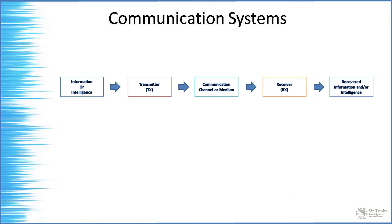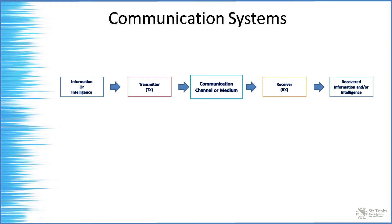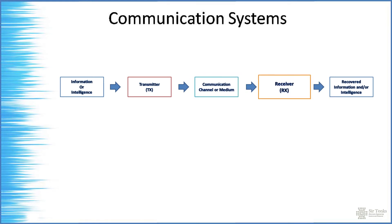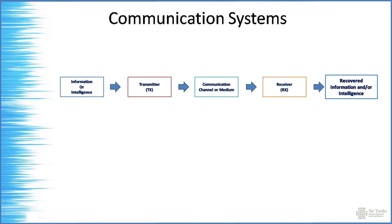This is the basic block diagram of a communication system. The information can be audio, video, or computer data. We have the transmitter and the channel — which can be wired, wireless, fiber optic, or free space — and the receiver. The receiver handles interpretation, for example your ear listening to your favorite FM station and understanding what the DJ says.